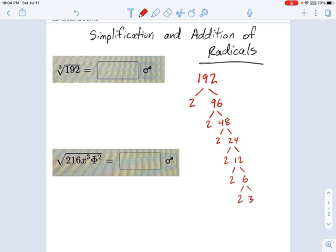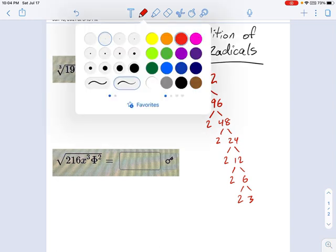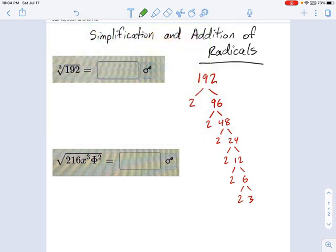Now I have all the prime numbers of 192, and what you're going to do is find how many groups of 3 I have, because this is the cube root that we're looking for. Here is a group of 3 and here is a group of 3, and that's it. Each of those groups of 3 is going to generate one term that pops out of the radical sign.